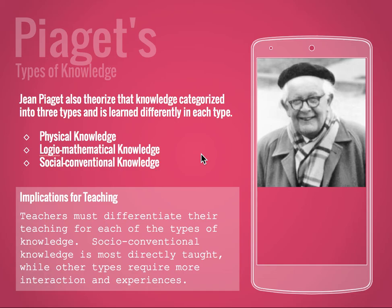Another part of Piaget's theory is the types of knowledge theory. This theory categorizes knowledge into three types and states that learning is different in each type. So there are three kinds of knowledge: physical knowledge, logico-mathematical knowledge, and social conventional knowledge.